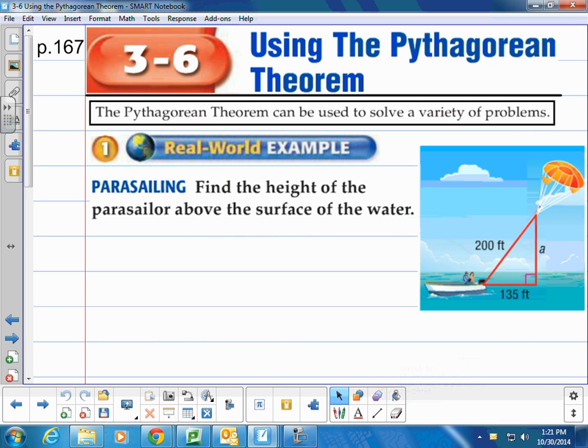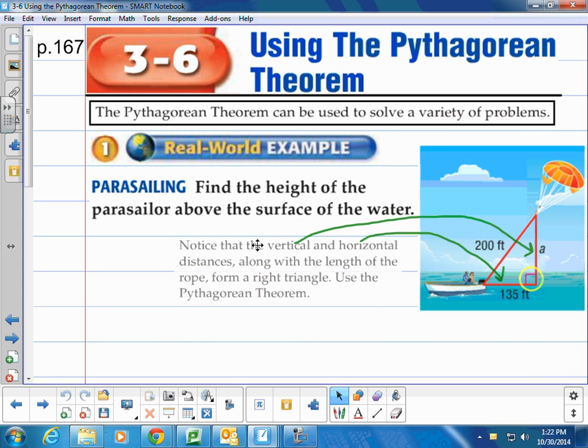So, parasailing. Find the height of the parasailor above the surface of the water. So notice here we have a nice little picture. We have some people boating, and it looks like they're 135 feet away from the part of the water where the parasailor is above. The diagonal, and maybe this is the rope of which he's parasailing, is 200 feet. We're wondering about how high above the water he is. And we can find that because what we notice is that the vertical and horizontal distances, they form a right angle and a right triangle. So we can use the Pythagorean Theorem because of that.